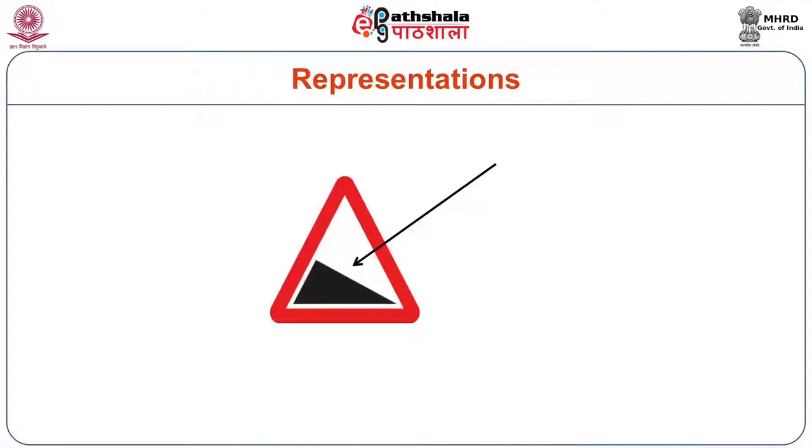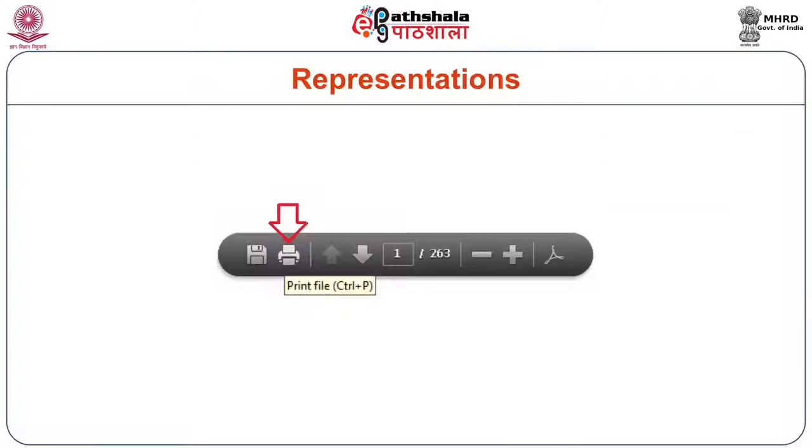Icons are signs which have some correlation in terms of shape or function to the object they represent. When we see the symbol of a gradient, a slope, it means the road is shaped this way. When we see the icon of a printer, it means a printer. So, the icon is a sign which has some physical or functional similarity with the object it represents.